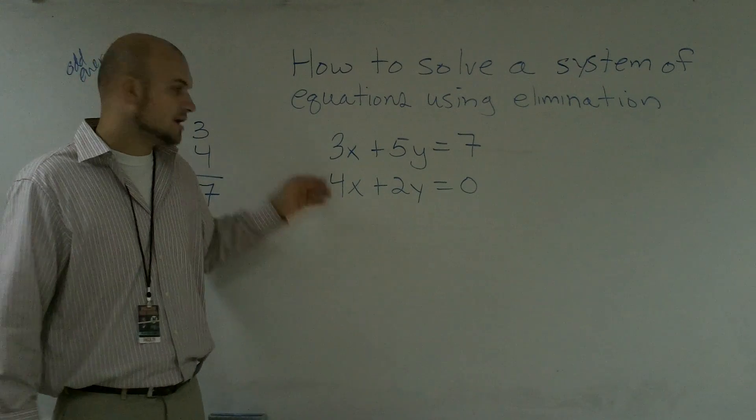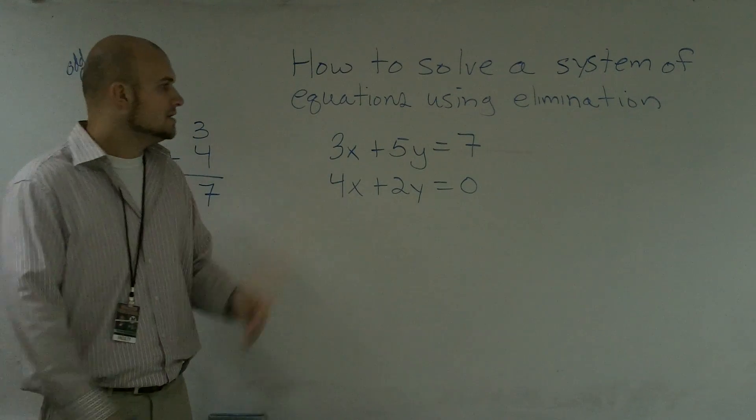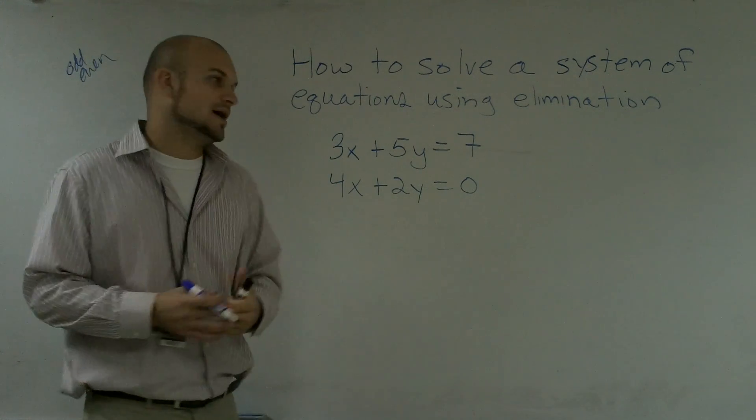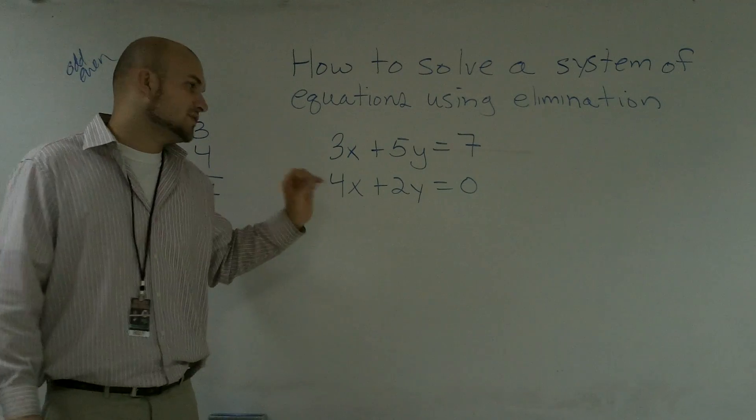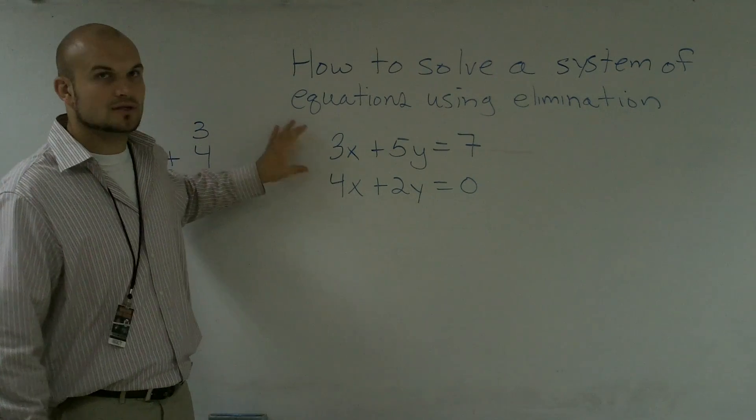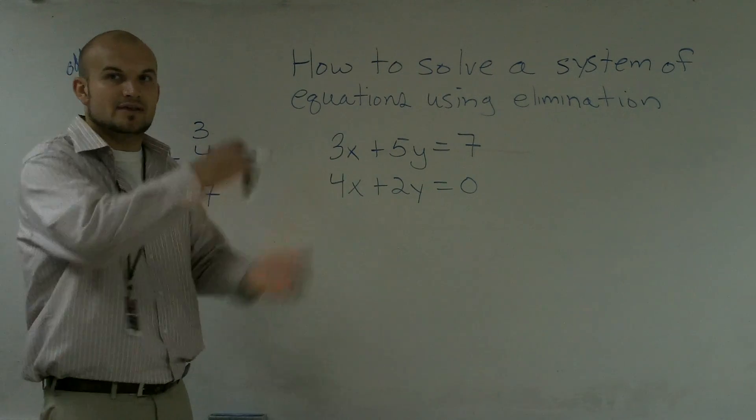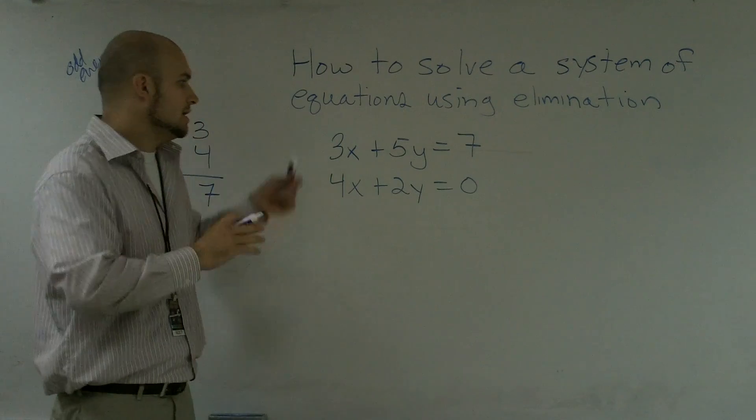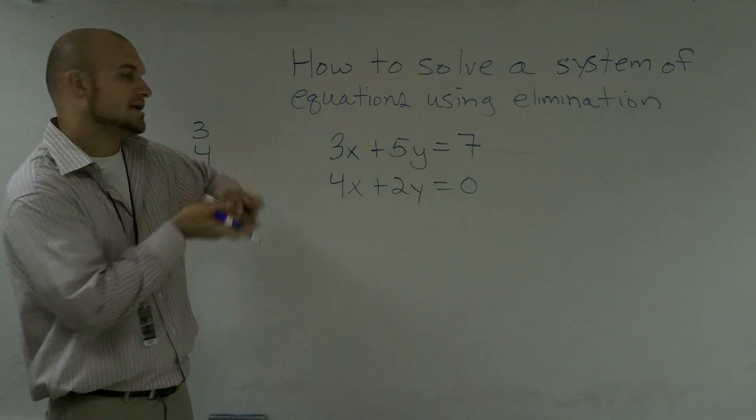None of these are going to, when added, make zero. So what we can do is we can multiply both or one equation by a multiple to get one of them to be negative, and therefore when we add them together, the two numbers will cancel out.